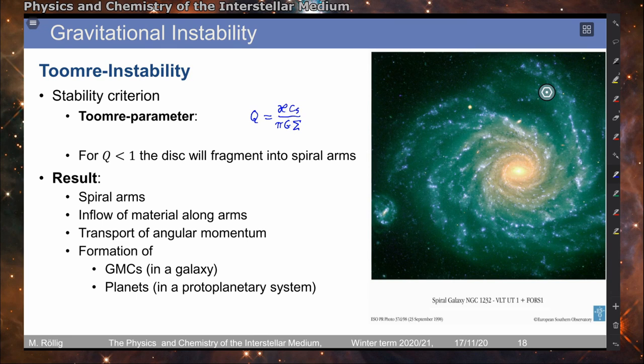And when we have a Q that is smaller than 1, so when we have the case that the denominator here dominates over the numerator, then we will have a gravitational instability. And our disk will consequently fragment and then form, for example, spiral arms, as seen here on the figure on the right-hand side of a spiral galaxy.